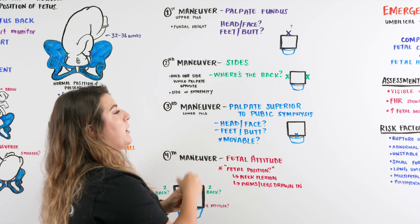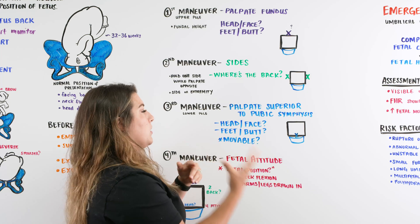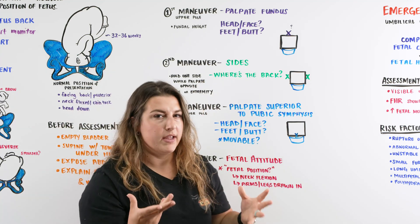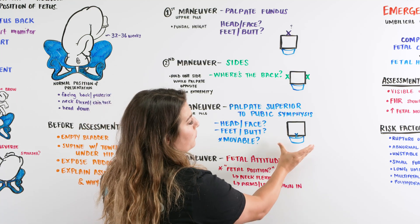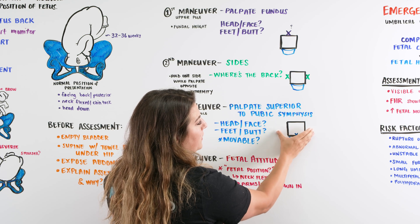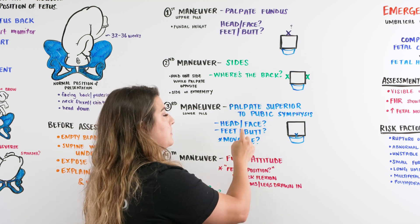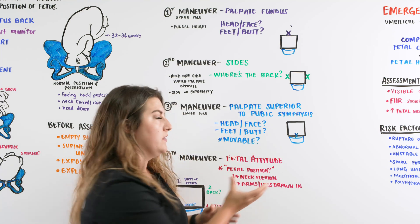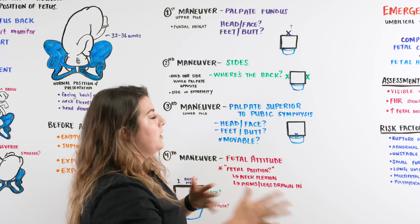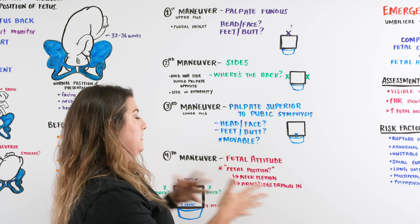The third maneuver is when we palpate the superior pubic symphysis, also called the lower pole — right above the pubic symphysis. We're palpating to look for the head or the feet or the butt. Using a grip right above the pubic symphysis, we feel for baby's head and then determine if it is movable, because we're trying to assess if baby's head is engaged within the pelvis. Over time you'll be able to determine if the baby is engaged or not engaged. It could also be the butt that's engaged, but hopefully that's not the case because baby would then be in a breech position.